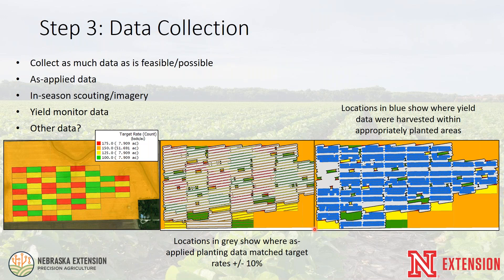As a result, we processed only 8 of the intended 16 blocks. In one bottom-left block, we wanted 125,000 seeds per acre but the grower likely didn't have the variable rate system engaged at the field boundary, so that treatment wasn't planted appropriately. We eliminated that entire block. We only included blocks where we had both solid planter as-applied data and solid yield monitor data.